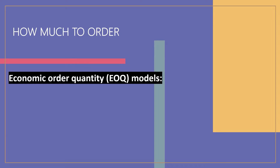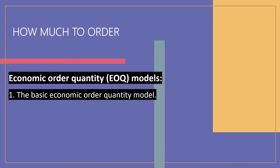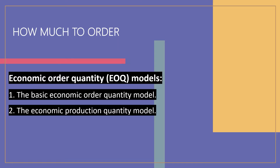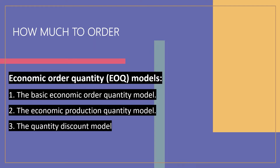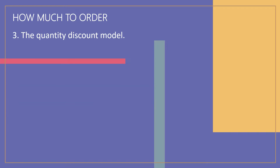Three order size models are there: the basic economic order quantity model, the economic production quantity model, and the quantity discount model. The basic economic order quantity and the economic production quantity models were explained in the previous two videos. Now the quantity discount model will be discussed.